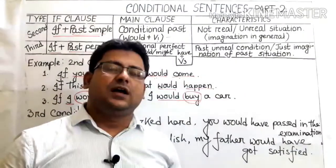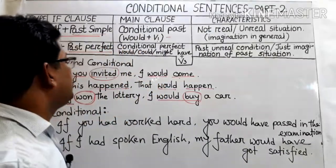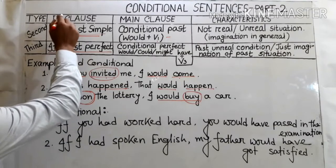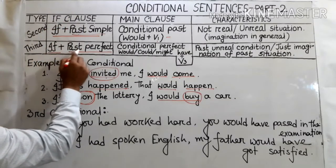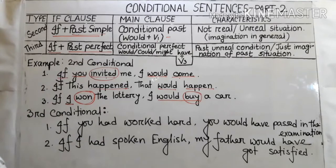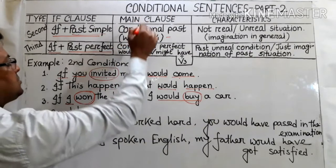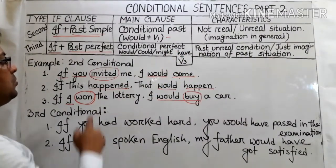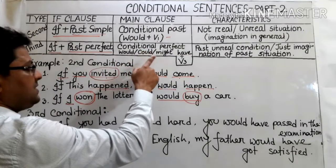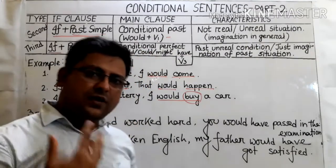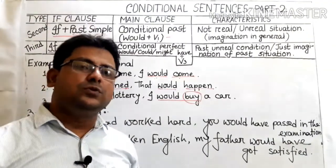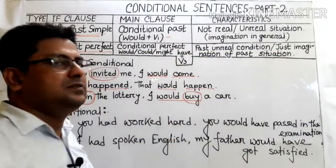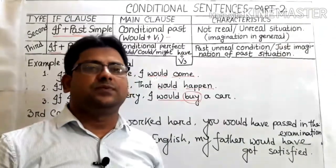Now we will discuss the third conditional. In the third conditional, the if-clause contains 'if' plus past perfect — that means after 'if' we use 'had' plus verb 3. On the other hand, the main clause contains the conditional perfect — that means we use 'would have,' 'could have,' or 'might have,' followed by verb 3, the past participle of the verb.